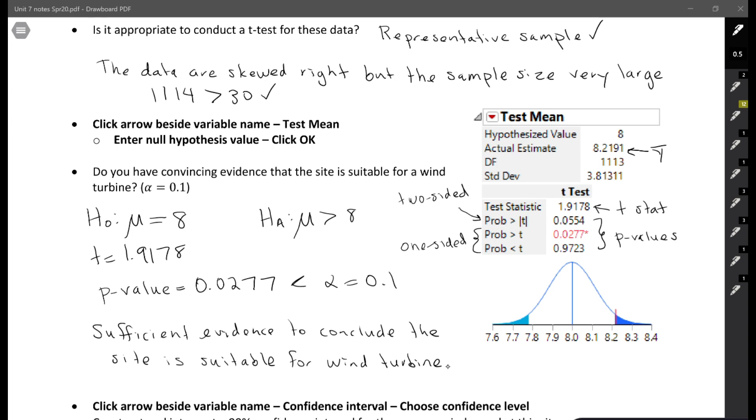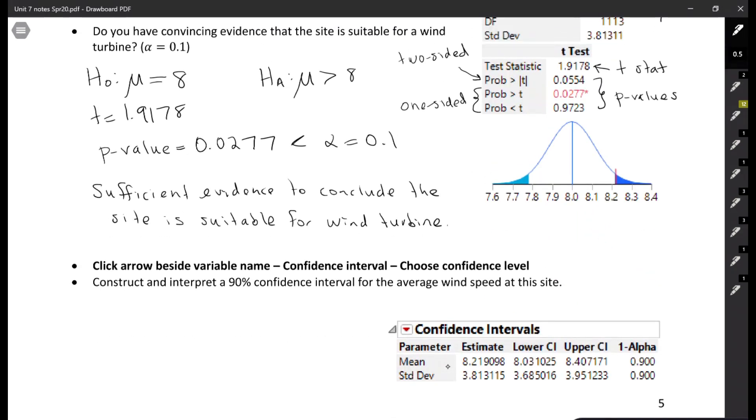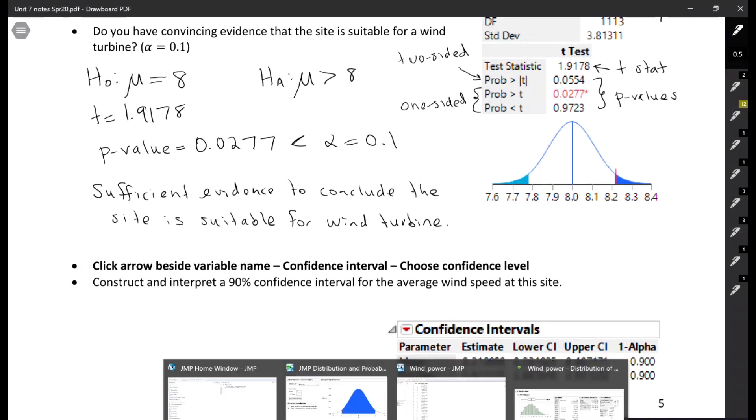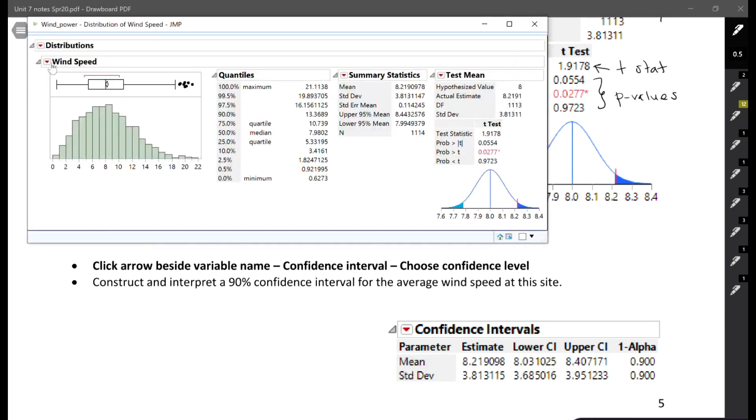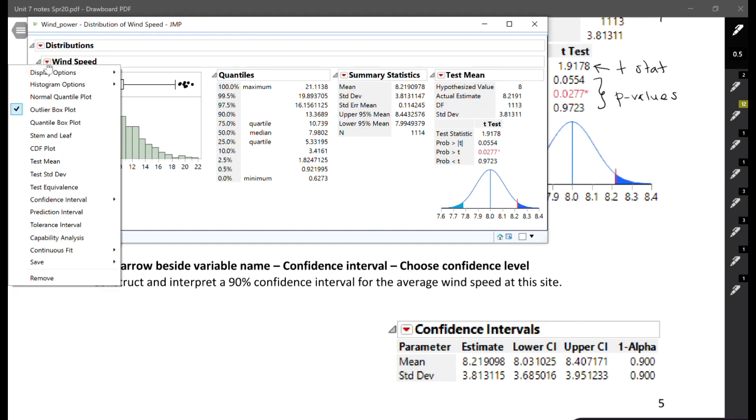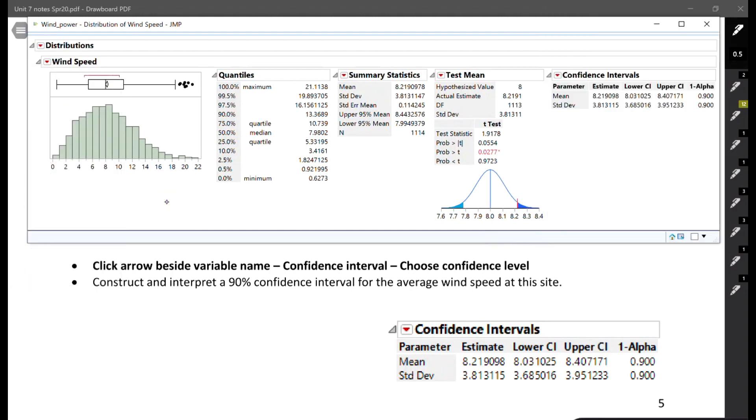The last thing I'm going to do is calculate my confidence interval. To do this, I'm going to go back into JMP and click the down arrow again beside the variable name. There's an option here for confidence interval. The notes say to use a 90% confidence interval, so I'll pick the confidence level there. This is where I get the output from.